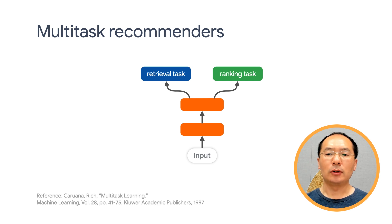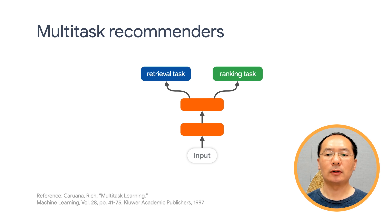For example, on YouTube, users can provide a variety of different signals. Users may watch some videos but skip others, which provides implicit feedback. They may thumbs up or down on the videos, add comments, and even share the videos to a social network like Twitter. Integrating all these different forms of feedback is critical to building systems that users love, and avoiding optimizing a single metric at the expense of overall performance. In addition, building a joint model for multiple tasks may produce better results than building a number of task-specific models. This is especially true when some data is abundant — for example, clicks — and some data is sparse — for example, comments or sharing. In those scenarios, a joint model may be able to use representations learned from the abundant task to improve its predictions over the sparse task via transfer learning.